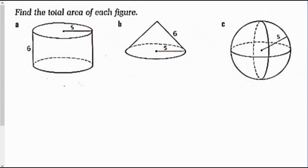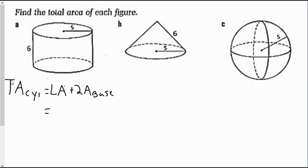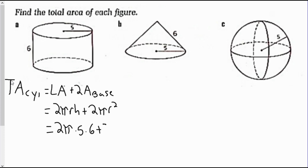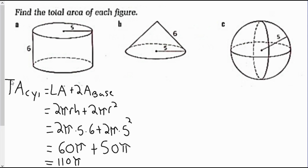Looking at some sample problems — find the total area of each figure. Our first figure is a cylinder. The total area equals the lateral area plus the area of the two bases: 2πrh + 2πr². Plugging in radius = 5 and height = 6: 2π(5)(6) + 2π(5²) = 60π + 50π = 110π units squared. So the area of the cylinder is 110π units squared.